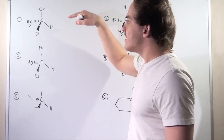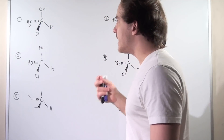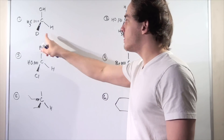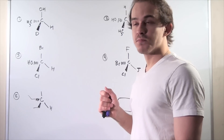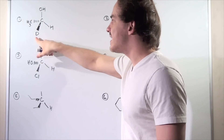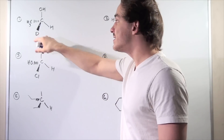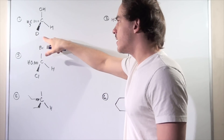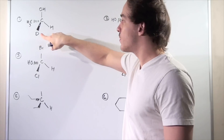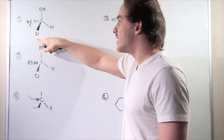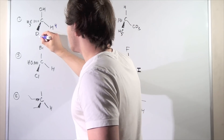This enantiomer has a stereogenic carbon attached to four different groups. We begin by identifying the lowest priority — the group with the lowest atomic number. Two of these groups have the same atomic number of one, but one is deuterium, an isotope of H with a higher atomic weight. So deuterium gets a three and regular hydrogen gets a four. The oxygen-attached group gets a one, and the carbon-attached group gets a two.